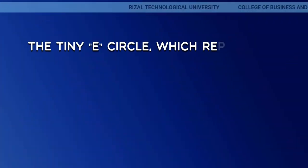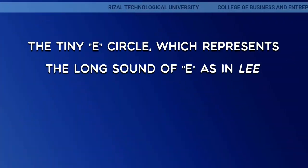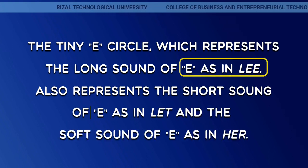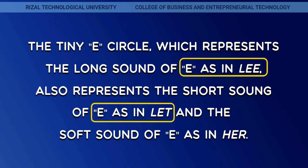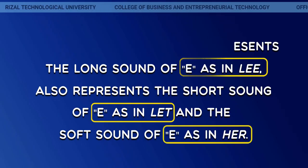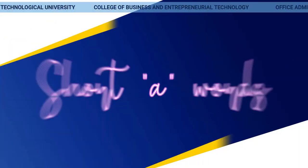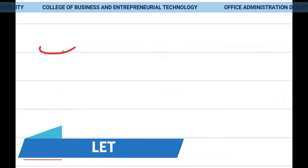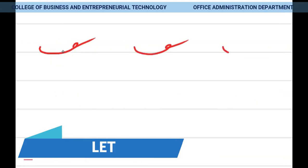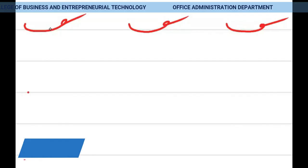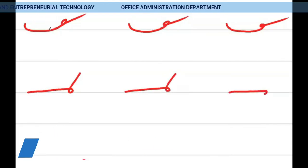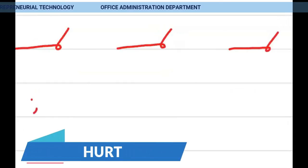The tiny E circle, which represents the long sound of E as in Lee, also represents the short sound of E as in let, and the soft sound of E as in her. Short and soft E words include: let, written A-L-A-T; mat or math, written E-M-A-T; and hurt, written H-E-R-T.